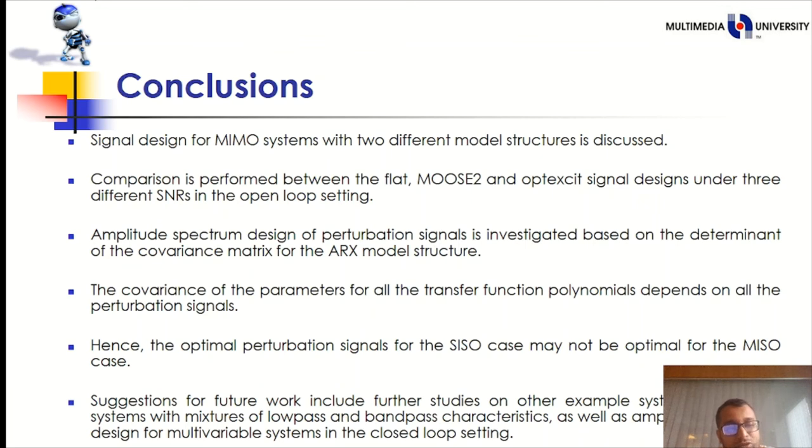Conclusion. Signal design for MIMO system with two different model structures is discussed. Comparison is performed between the flat, MOOSE2 and Optexcit signal design under three different SNRs in the open loop setting. Amplitude spectrum design of perturbation signal is investigated based on the determinant of the covariance matrix for the ARX model structure. The covariance of the parameter for all transfer function polynomial depends on all the perturbation signal. Hence, the optimal perturbation signal for the SISO case may not be optimal for the MISO case. Suggestions for future work include further studies on other examples, especially systems with mixed lowpass and bandpass characteristics as well as amplitude spectrum design for multi-variable system in closed loop setting.